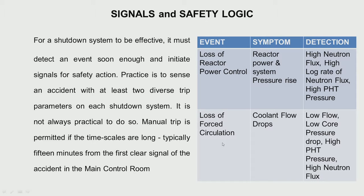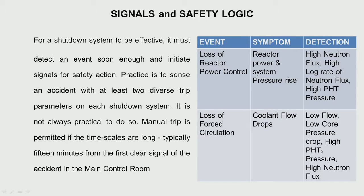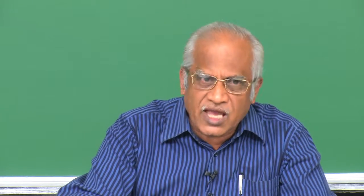For loss of forced circulation, the signals are low flow, or low core pressure drop in a PHWR, or high temperature in a fast reactor, and high primary system pressure. No credit is taken for manual trip for a minimum of 15 to 30 minutes — the first clear signal comes to the control room after 15 minutes and no credit is taken before that. Everything should be automatic. In most reactors it is now 30 minutes.